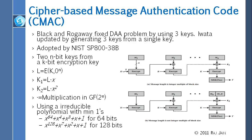If you do that, then nobody can play with it by adding one block. Then somebody else came up and said you don't need three keys — you can generate the other two keys from one key. So you can just use one key and do something with it to get k1 and k2. And that is what was adopted by NIST. That is called CMAC.